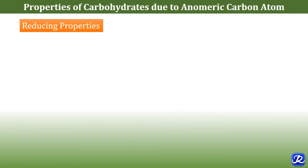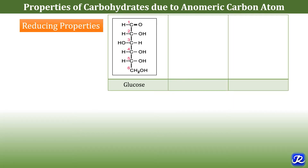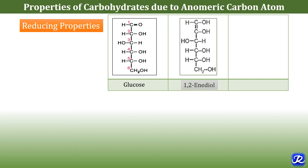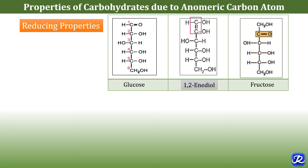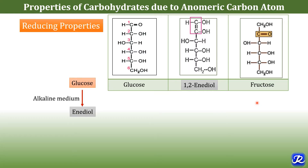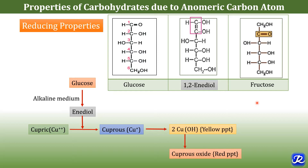The second property of carbohydrates due to anomeric carbon atom is tautomerization or enolization. In alkaline medium, glucose produces fructose and mannose through an intermediate form called 1,2-enediols. In this 1,2-enediol, there is a shift of hydrogen from one carbon atom to another. This intermediate form is a strong reducing agent, and the reducing properties of carbohydrates are due to these 1,2-enediols. In alkaline medium, glucose undergoes enolization, causing reduction of cupric ions to cuprous ions and formation of cuprous oxide precipitate. This is the principle behind the Benedict test.